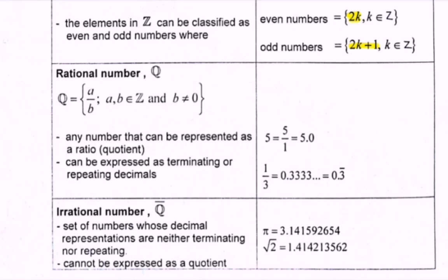Next we have the rational number, which is denoted as capital Q, with the formula a over b — expressed as a fraction — where a and b must be integers and b is not equal to 0. Any number that can be represented as a ratio, quotient, or fraction is a rational number. For example, the number 5 can be represented as 5 over 1, which equals 5.0.